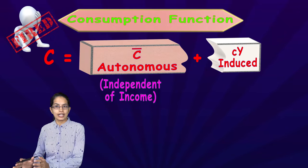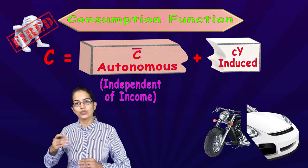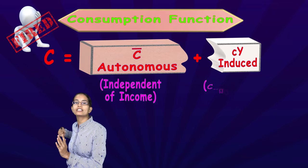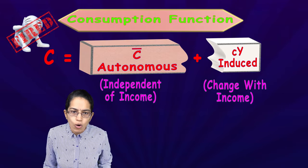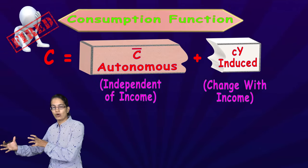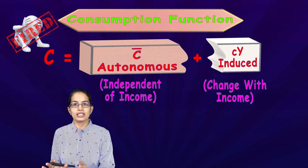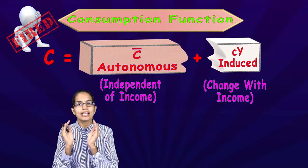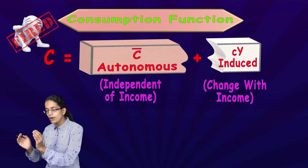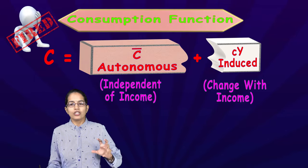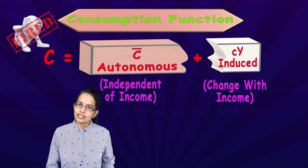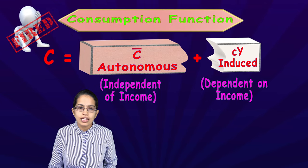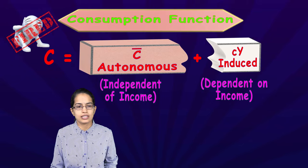The remaining consumption that I do — say switching from a two-wheeler to a four-wheeler — would change with income. The second component, the CY component, means the marginal propensity to consume with the change in income, and that is your induced consumption. This portion of your consumption pattern is dependent on income, while the autonomous portion is independent of income.